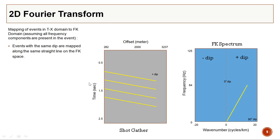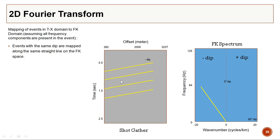If you have multiple linearly dipping events parallel to each other — all corresponding to the same dip — they all map along the same line in FK space. The main difference between one event and multiple events with the same dip is the amplitude (the third axis): you will see a higher amplitude if several events share the same dip. Negatively dipping events are mapped on the negative dip side of the FK spectrum.